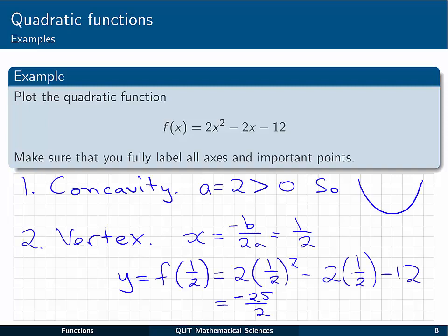Okay, so first of all, the concavity. We can see that the value of a is 2, and that's greater than 0. So we're going to have a curve that looks in this sort of shape, opening upwards with a minimum value at the vertex. The vertex itself, x is equal to minus b on 2a, so we get 1 on 2 for that, by substituting in the a and b values. Then just evaluate the function at that x value, f of a half, substitute in, and you'll get minus 25 on 2.